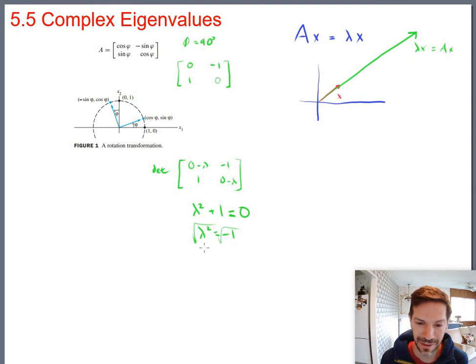And there are no real solutions to that equation. If you keep going, you get lambda squared equals negative 1. And if you really keep going, you get that lambda equals plus or minus square root of negative 1. And if we're looking for real eigenvalues, it's game over. There aren't any.